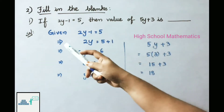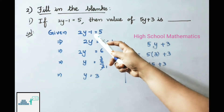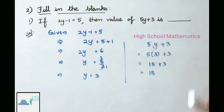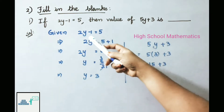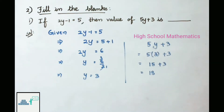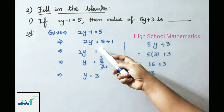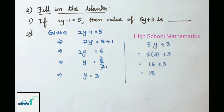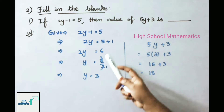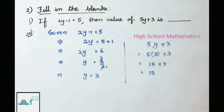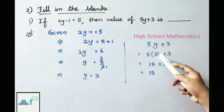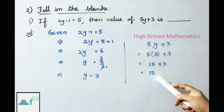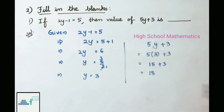Question 2, fill in the blanks. First: if 2y - 1 = 5, then find the value of 5y + 3. Solving: 2y - 1 = 5 → transposing -1: 2y = 5 + 1 = 6 → y = 6 ÷ 2 = 3. Substituting y = 3 into 5y + 3: 5 × 3 + 3 = 15 + 3 = 18. Therefore the value of 5y + 3 is 18.